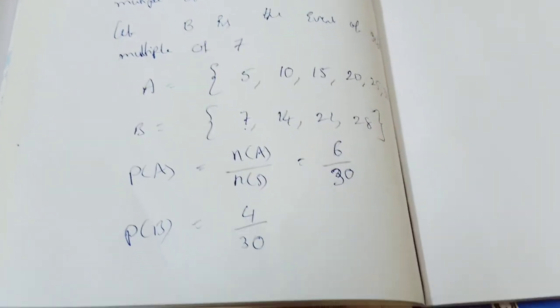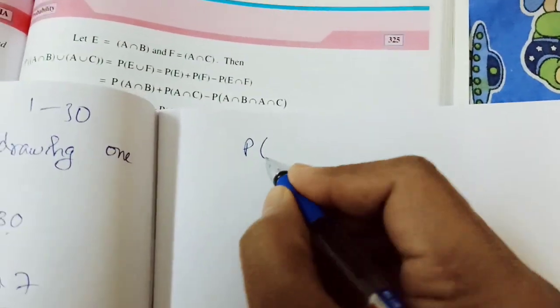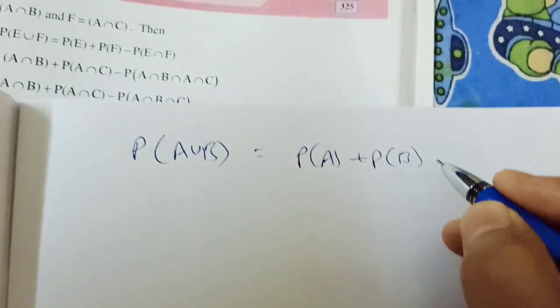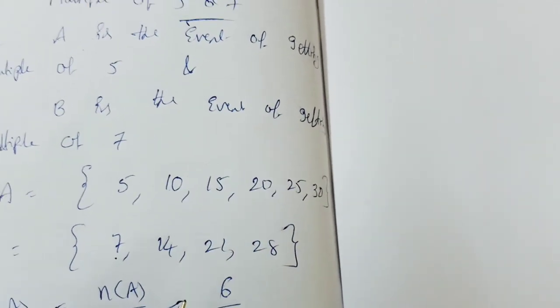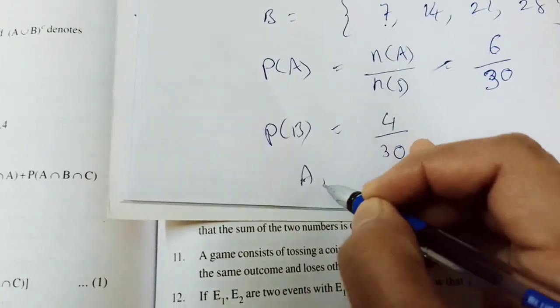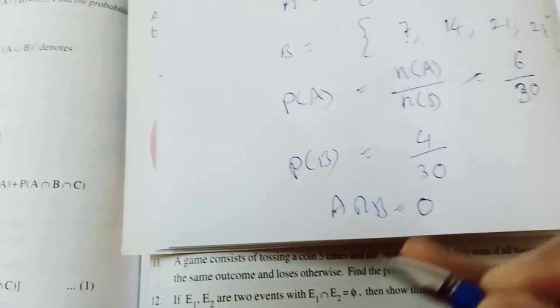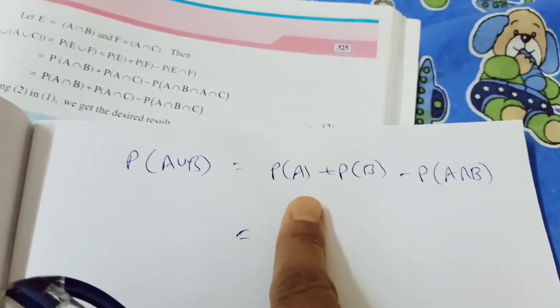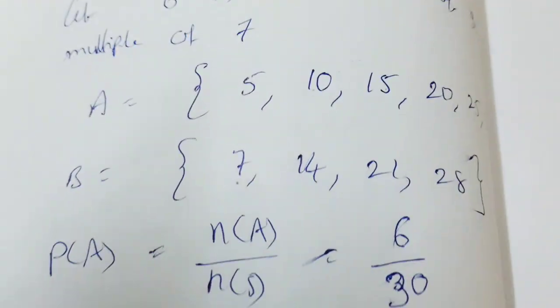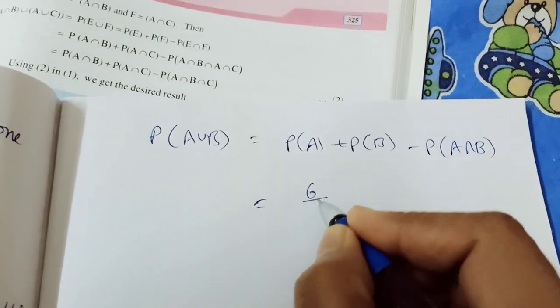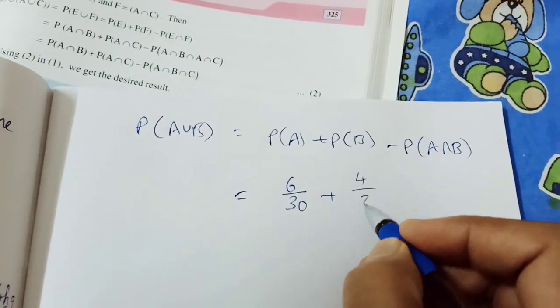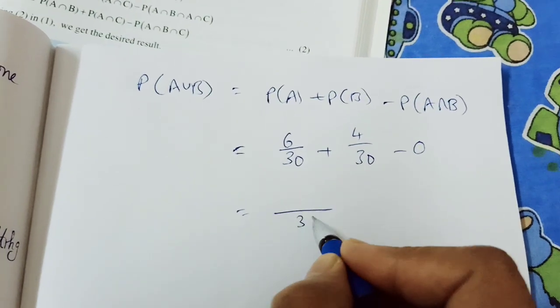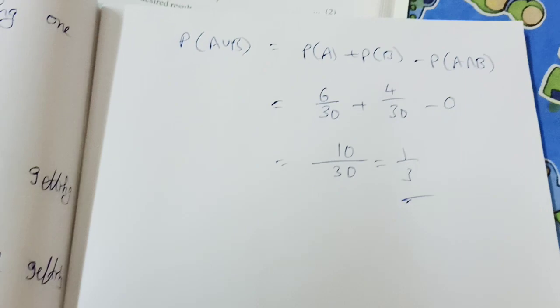Using the addition theorem, P(A union B) equals P(A) plus P(B) minus P(A intersection B). Since multiples of 5 and 7 have no common elements in 1 to 30, P(A intersection B) is 0. So P(A union B) = 6 by 30 plus 4 by 30 minus 0. That gives 10 by 30, which simplifies to 1 by 3. First option is completed.